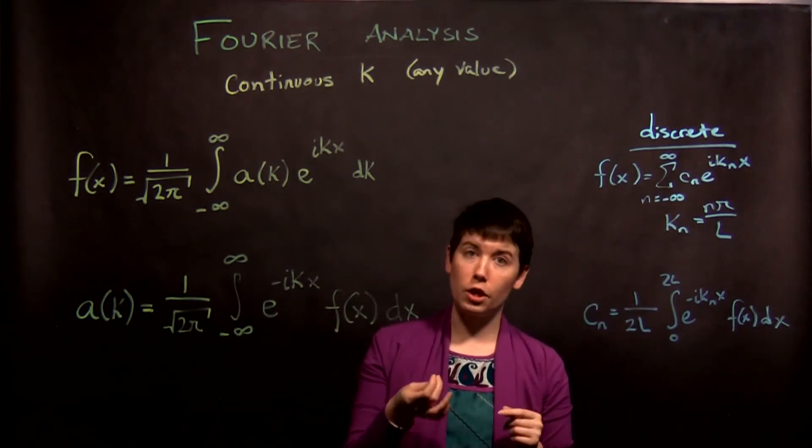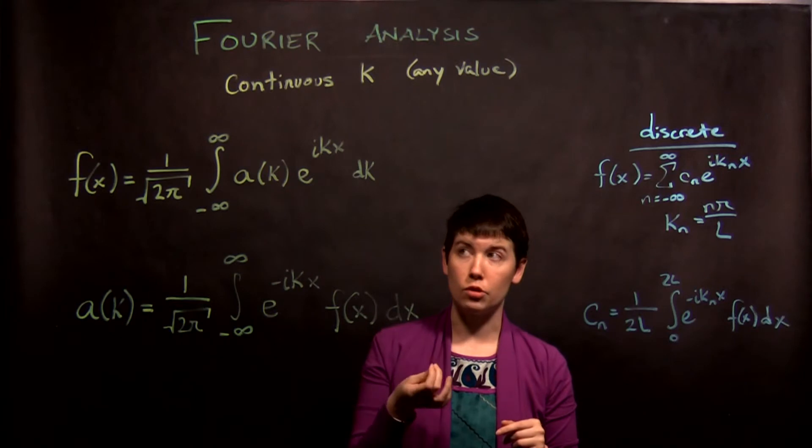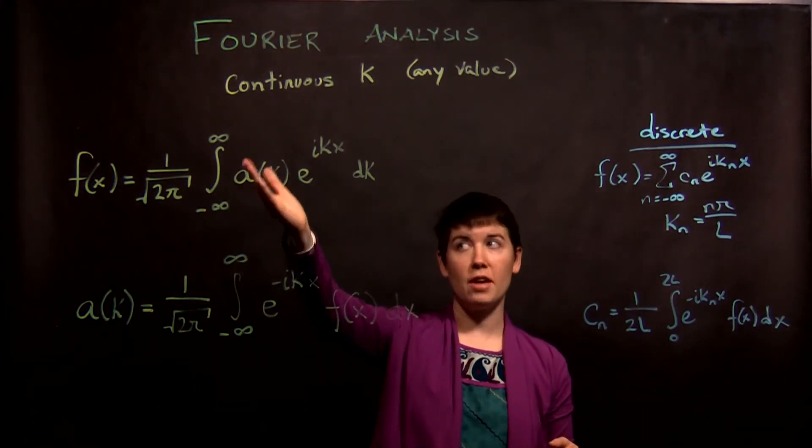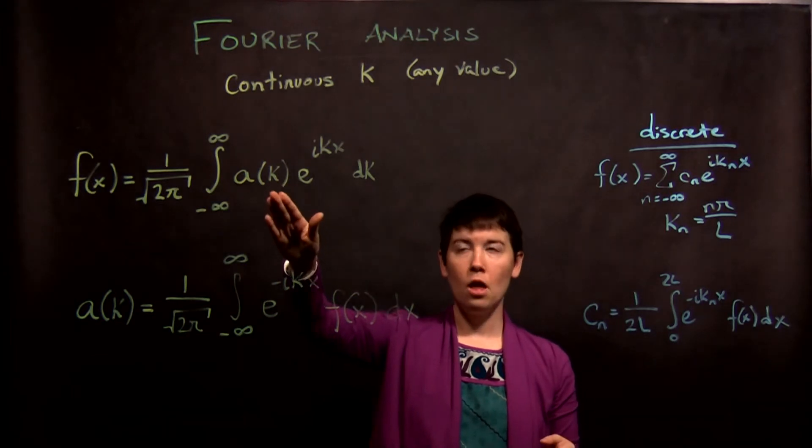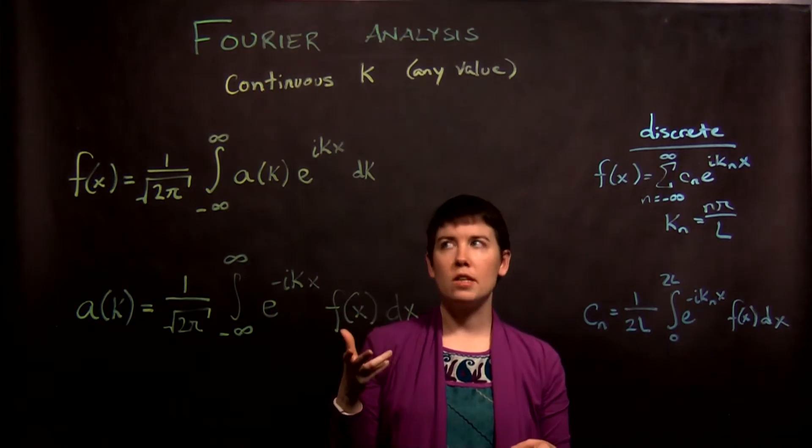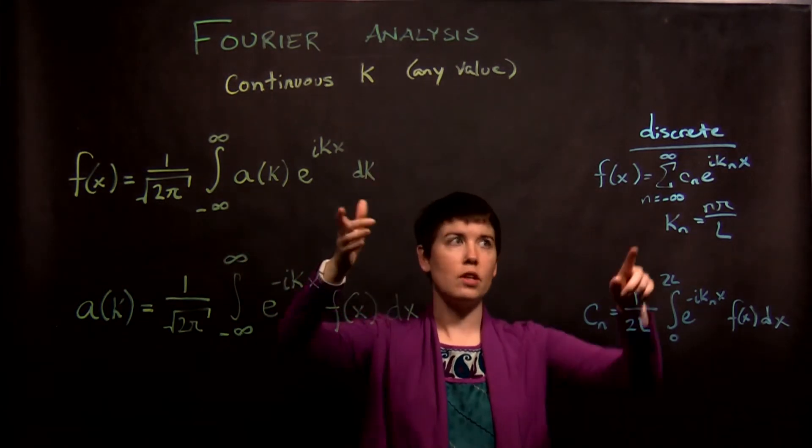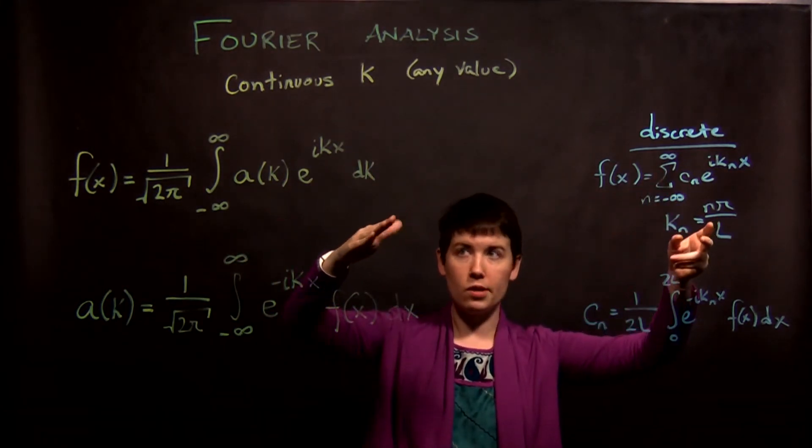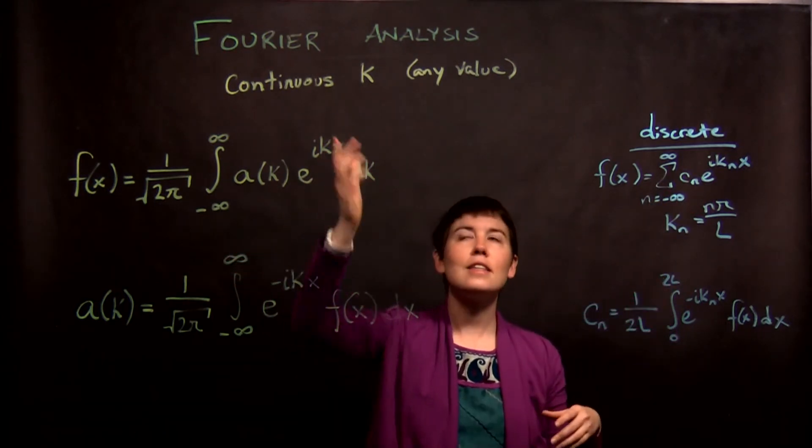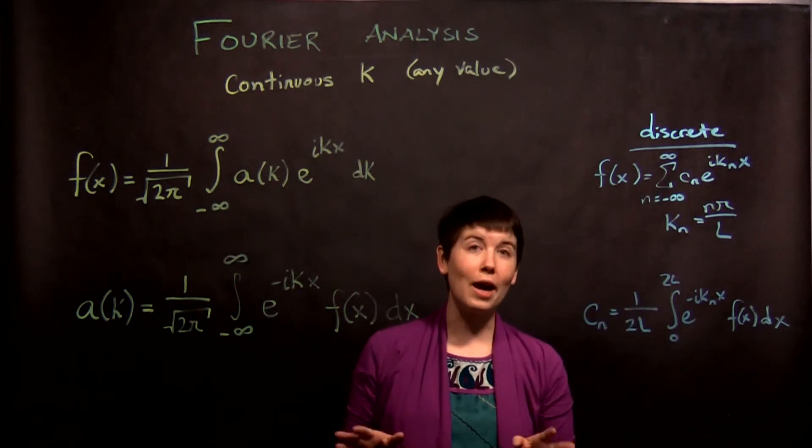Before we could label each of our coefficients with the value of n that it corresponded to. Now we can't. Our coefficient has to be a function of k. And notice that this is dk, it's not dx, because what we're trying to do is integrate over all possible values of k instead of sum. That e to the ikx term is still there, so that hasn't changed.